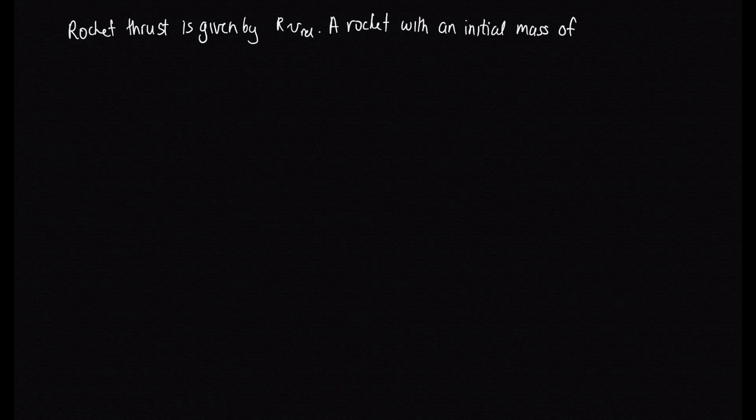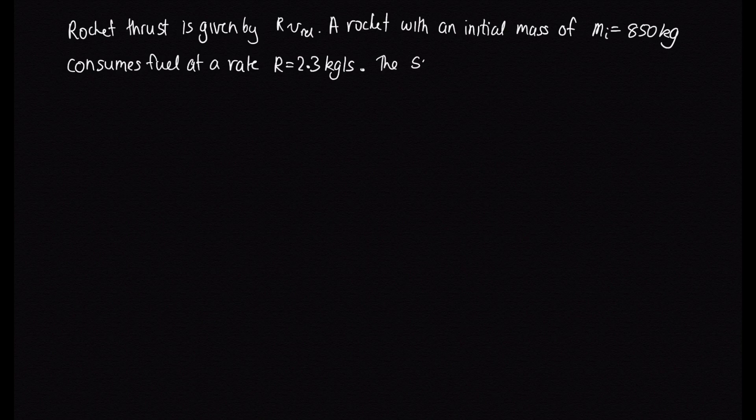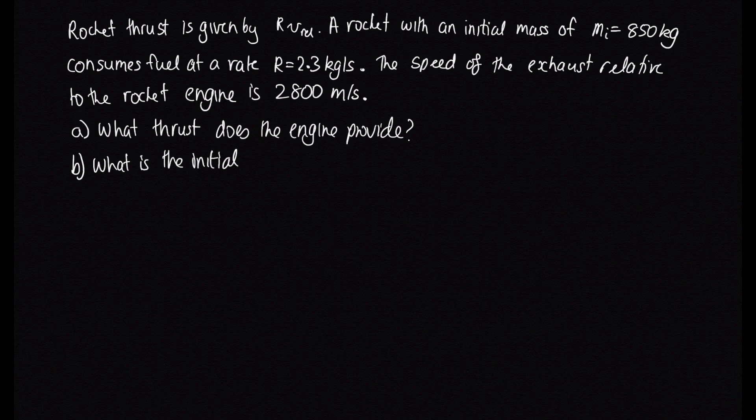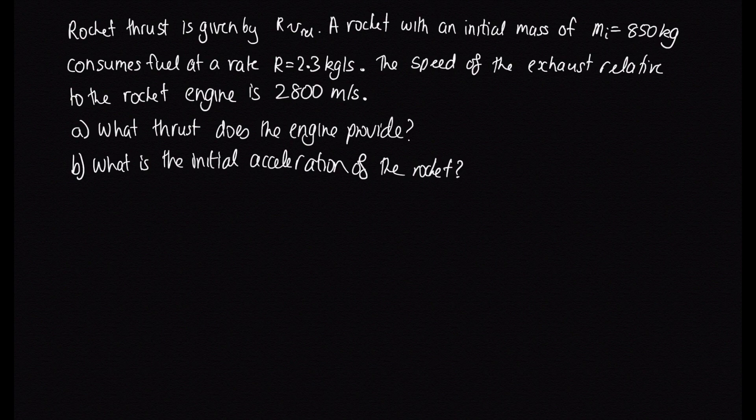So let's have a look at the problem now. Rocket thrust is given by r times v relative. A rocket with an initial mass of mi equals 850 kilograms consumes fuel at a rate r equals 2.3 kilograms per second. The speed of the exhaust relative to the rocket engine is 2800 meters per second. What thrust does the engine provide?